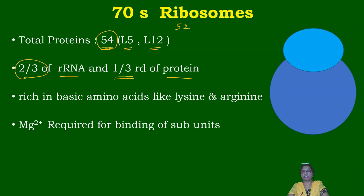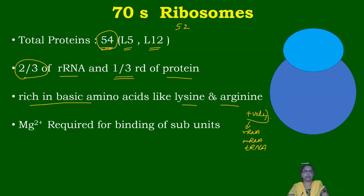In prokaryotic ribosomes, two-thirds is ribosomal RNA and one-third is ribosomal proteins. All ribosomes, whether prokaryotic or eukaryotic, are rich in basic amino acids like lysine and arginine, making ribosomal proteins positively charged so they can bind negatively charged rRNA, mRNA, and tRNA. Magnesium ions are required for binding the two subunits together.